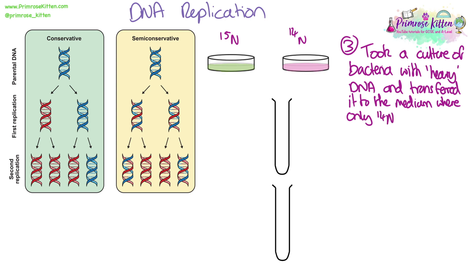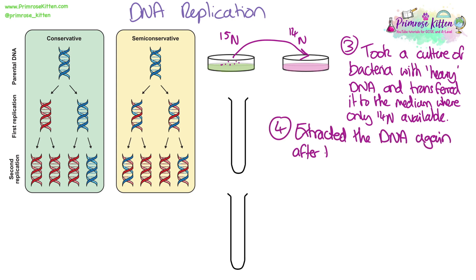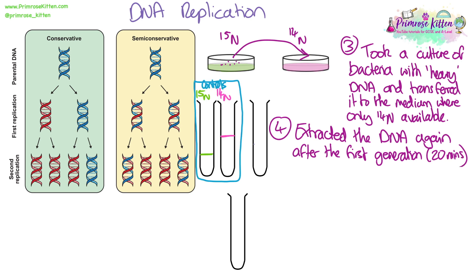The next step was to take the bacteria that had been grown with the heavy isotope and transfer them to a medium where only nitrogen-14 was available. They then extracted the DNA again after the first generation — the bacteria were doubling roughly every 20 minutes. Compared to their controls of a light band and a heavy band, what they found with the first generation of these bacteria was a band somewhere in the middle, and it was a bit thicker.